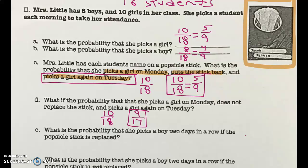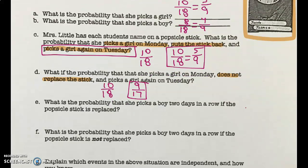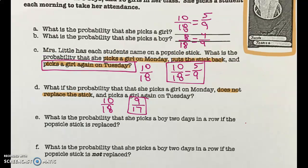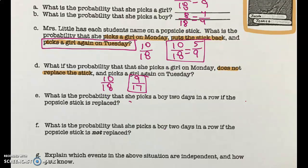Pay attention to replacing or not replacing. What is the probability that she picks a boy two days in a row if the popsicle stick is replaced? It's asking about both days. Boys is eight out of 18. So the first day it's eight out of 18. She's going to replace the stick, pick it again — so on the next day, she puts that stick back. How many total sticks are still in there? There's still 18. How many boys are still in there? There's eight.